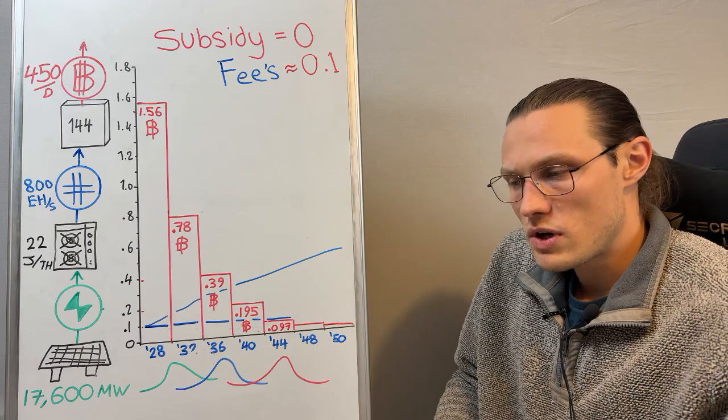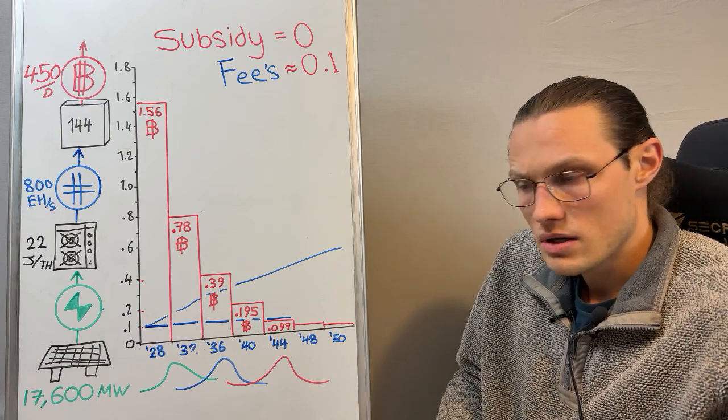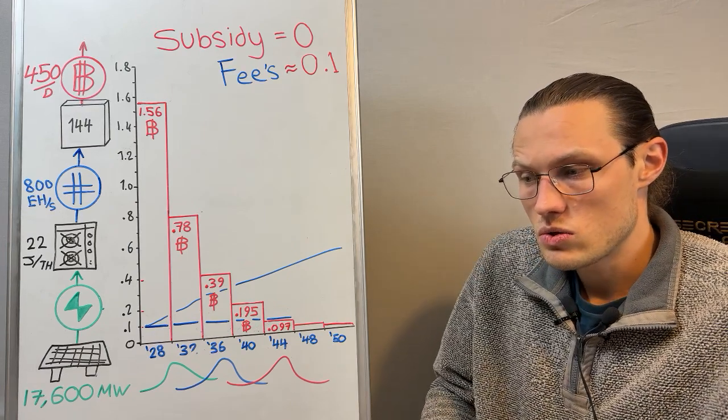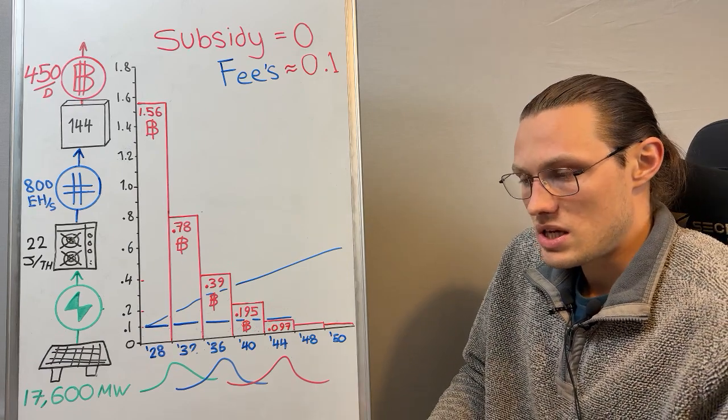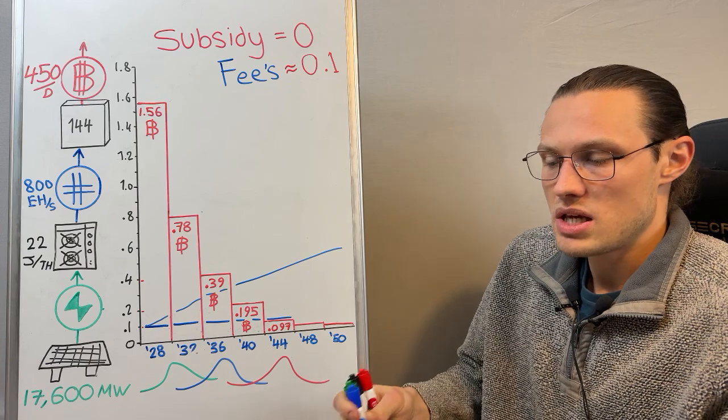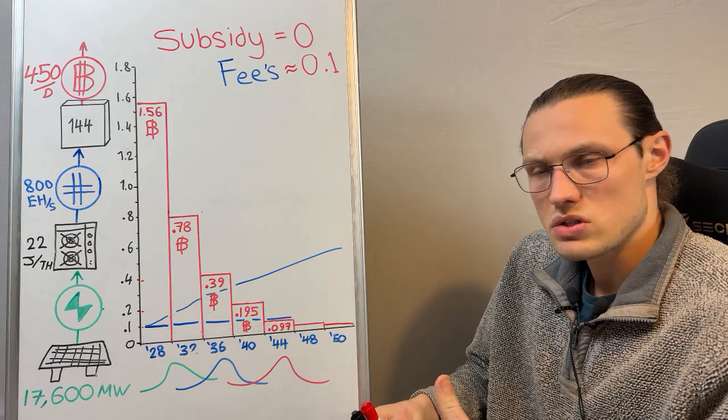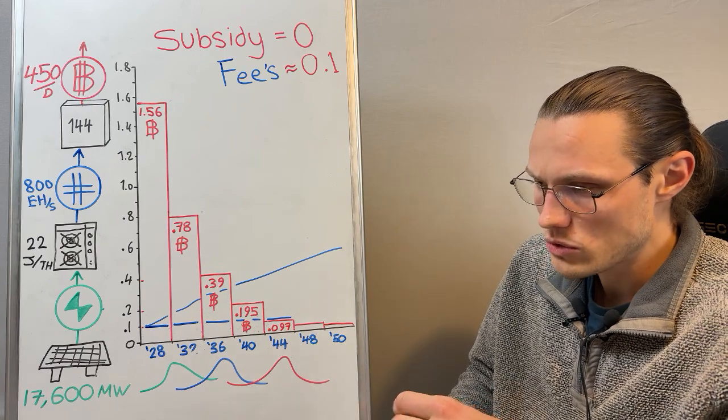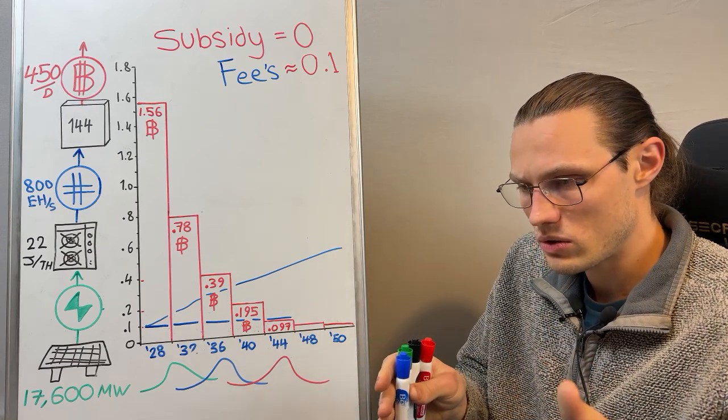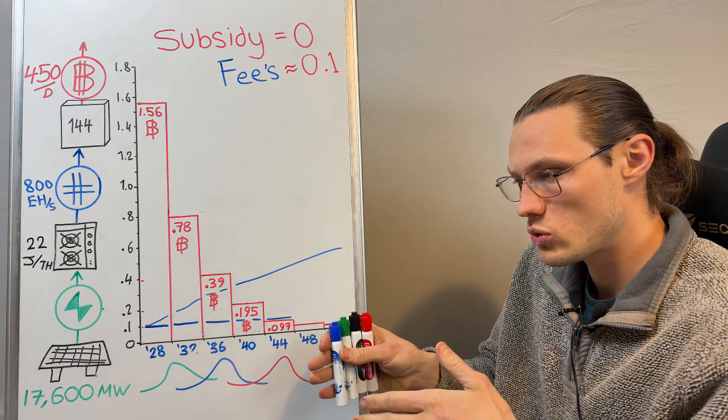There are several reasons why fees could massively increase, and one of them is actually to do with quantum computing. Because what happens is, if we need to update the Bitcoin blockchain to have quantum-resistant wallets and messaging systems within the blockchain, well you would have to move all of the old Bitcoin in old wallets into new quantum-resistant wallets.